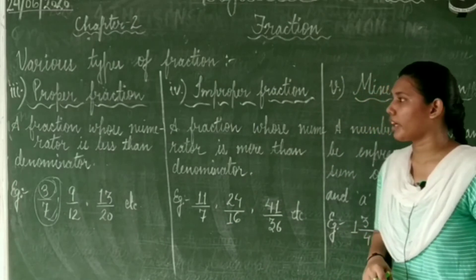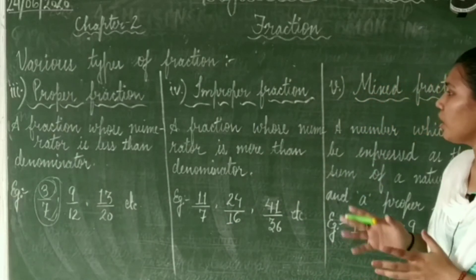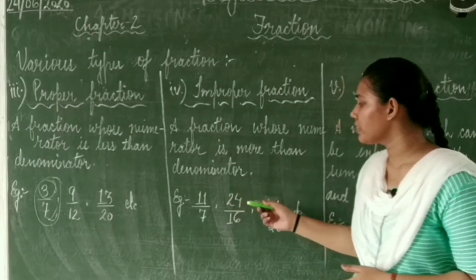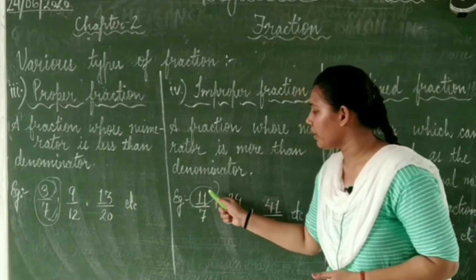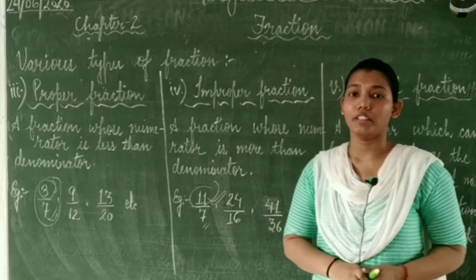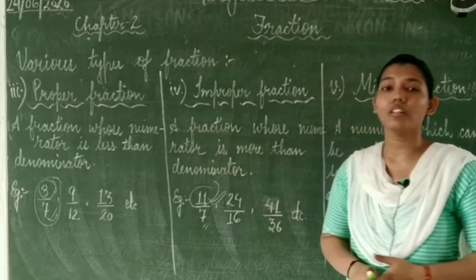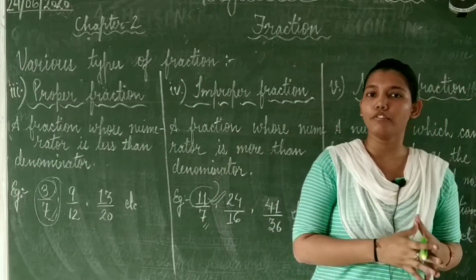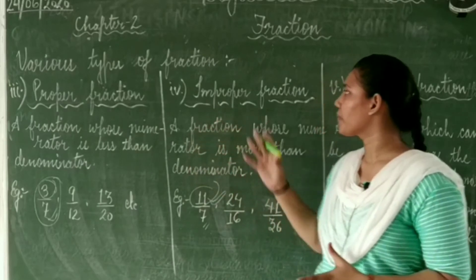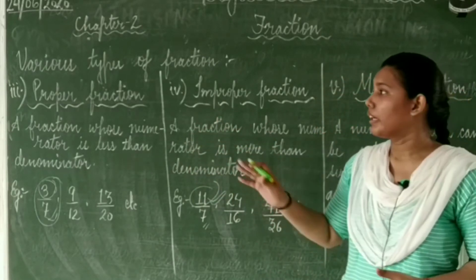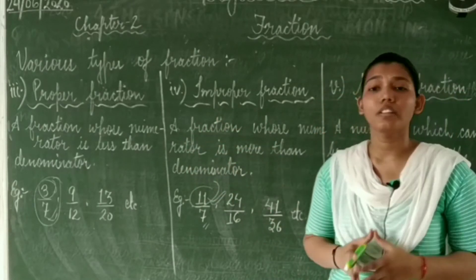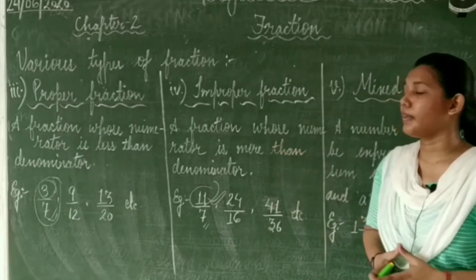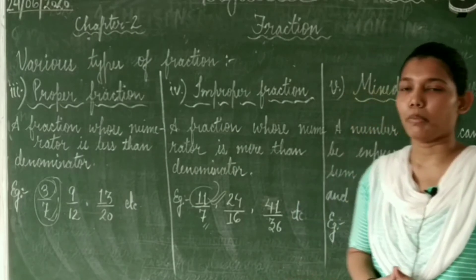Now the improper fraction. In an improper fraction, the numerator is more than the denominator — it means the numerator should be greater than the denominator. It is just opposite to the proper fraction. In the proper fraction the numerator is less than the denominator, and in the improper the numerator is more than the denominator.